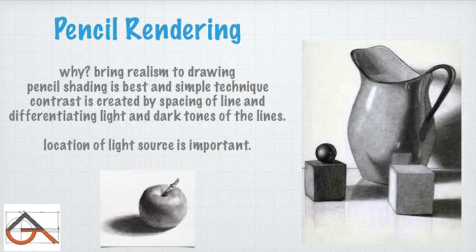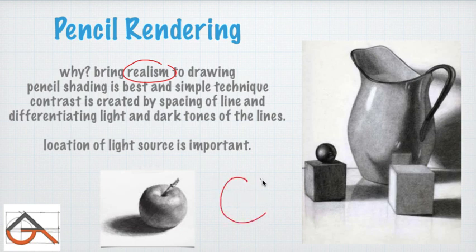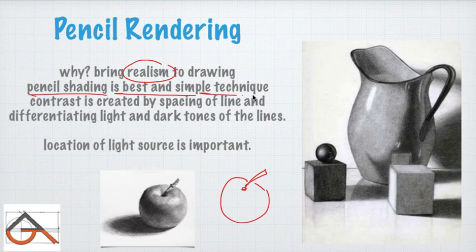Next: pencil rendering. Why do we need pencil rendering? It is for bringing realism to the drawing — to show it as it truly looks. If I just make an outline of an apple, it shows the shape but doesn't look real. So we need pencil rendering. Pencil shading is the best and simplest technique for bringing realism to a drawing. All other mediums are quite technical.